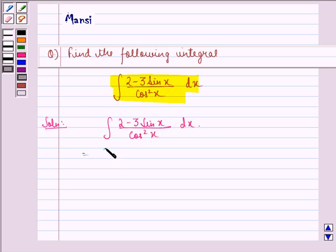Now, this can be written as 2 by cos square x minus 3 sin x by cos square x dx under the integral sign.